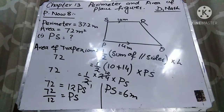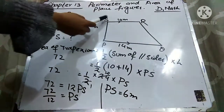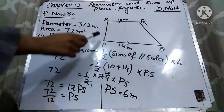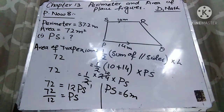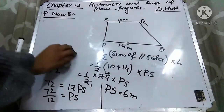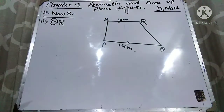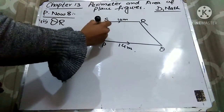The length of PS is equal to 6 meters. Now we have to find out the second part — the length of QR. We know the length of SR, and the length of PS is 6 meters. So here I am going to erase it so that I can find out the length of QR. In part 2, we have to find out the length of QR, and we have found PS is 6 meters.